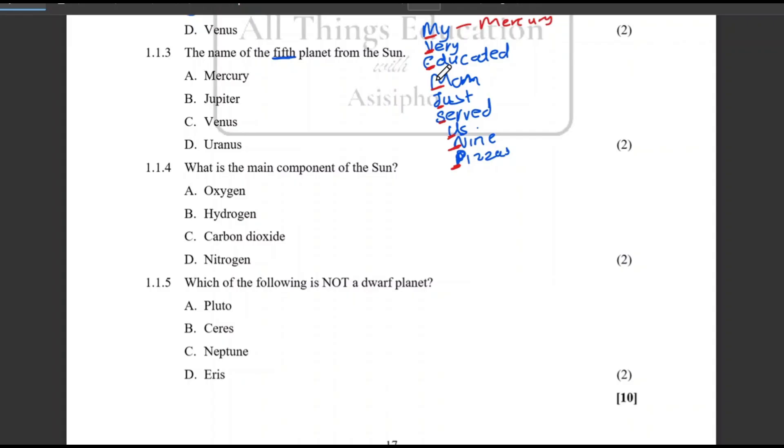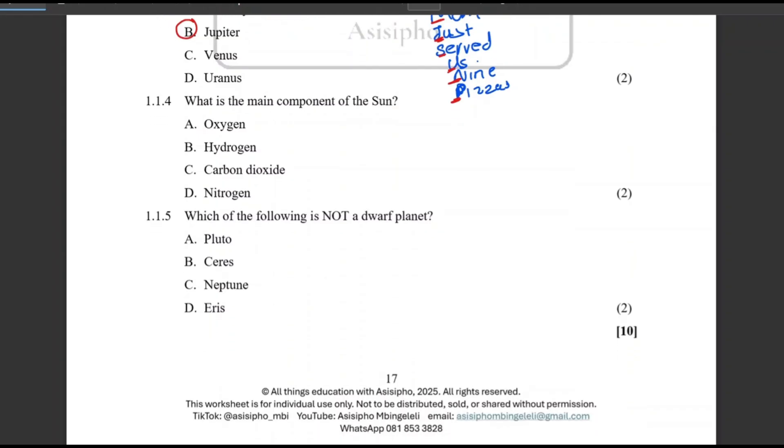Whatever method you've been taught in class, you can use it. So fifth, it's one, two, three, four, five. That's the one that starts with the J, that's Jupiter. So our answer is B. Easy peasy, right? If you have been taught a different method at school, please kindly let me know in the comment section so that I can obviously teach my learners about it and also help out other learners in order for them to remember the sequence of the planets.